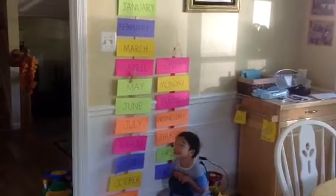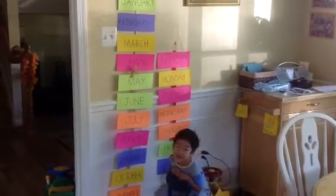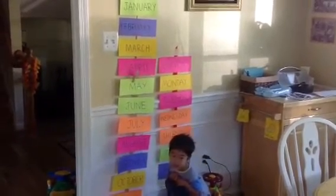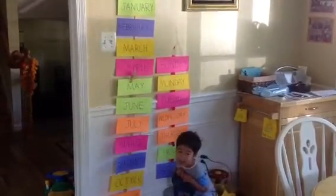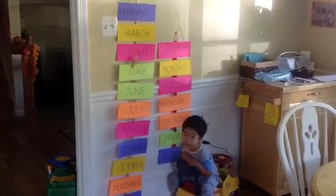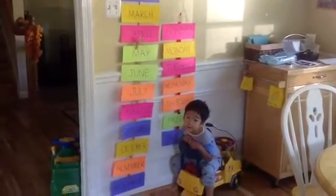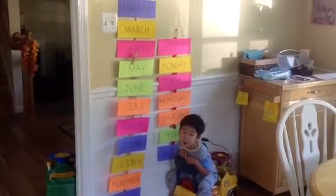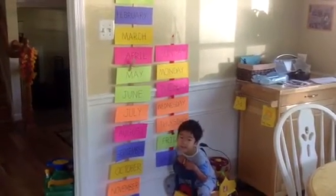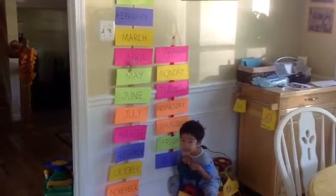January, February, April, May, June, July, and August, September, October, November, December — 12 months of the year. What month is this, Erin?